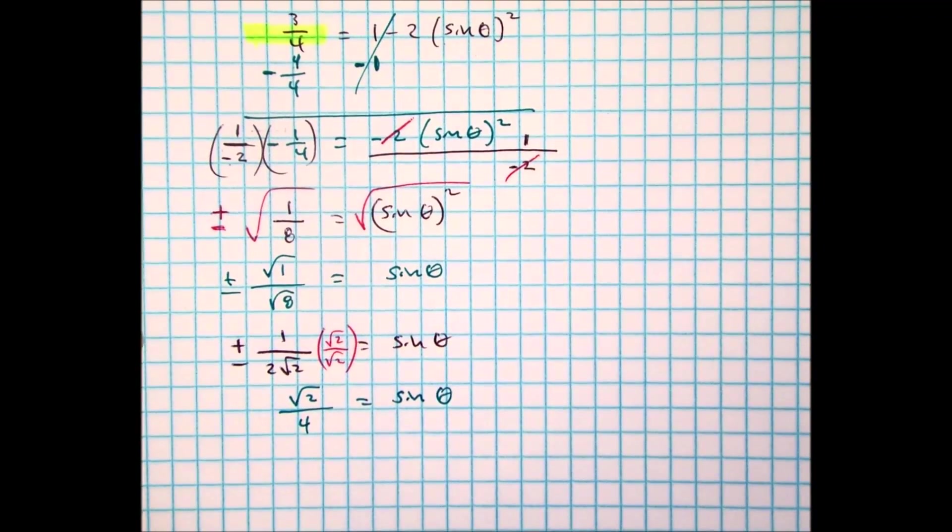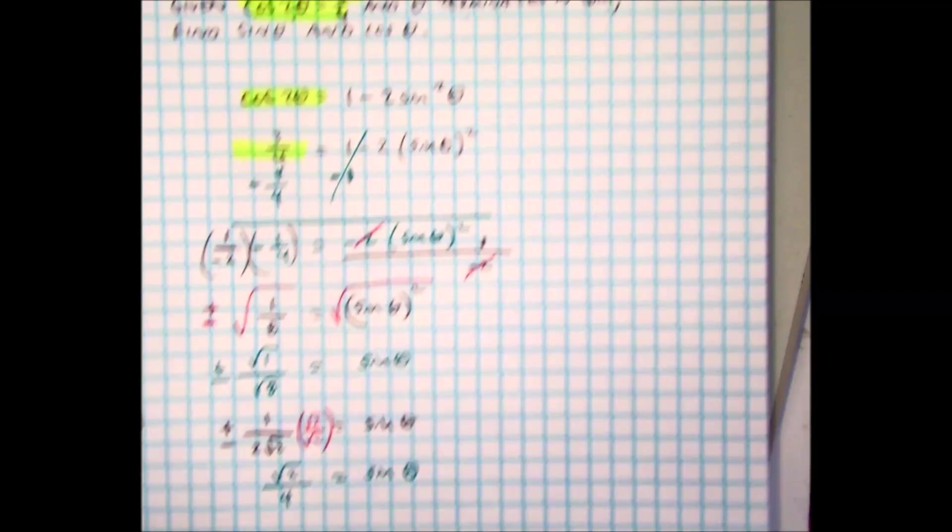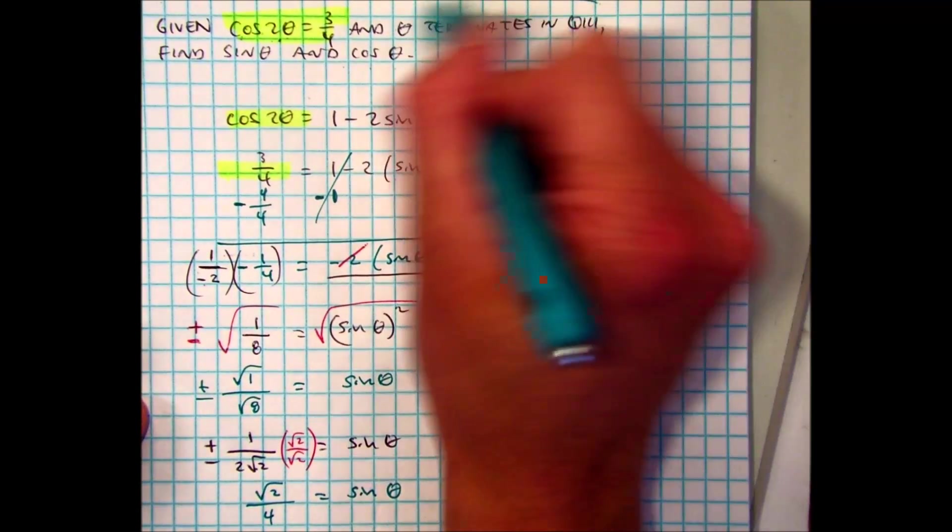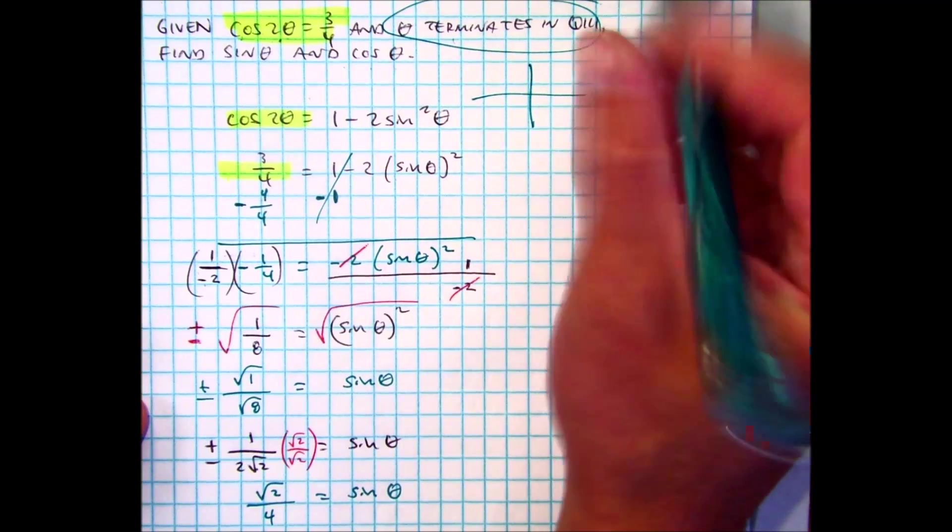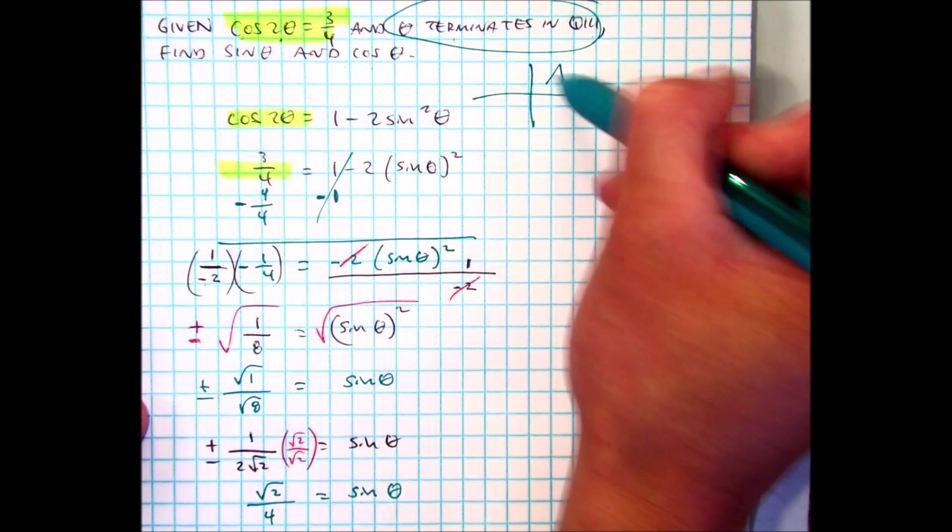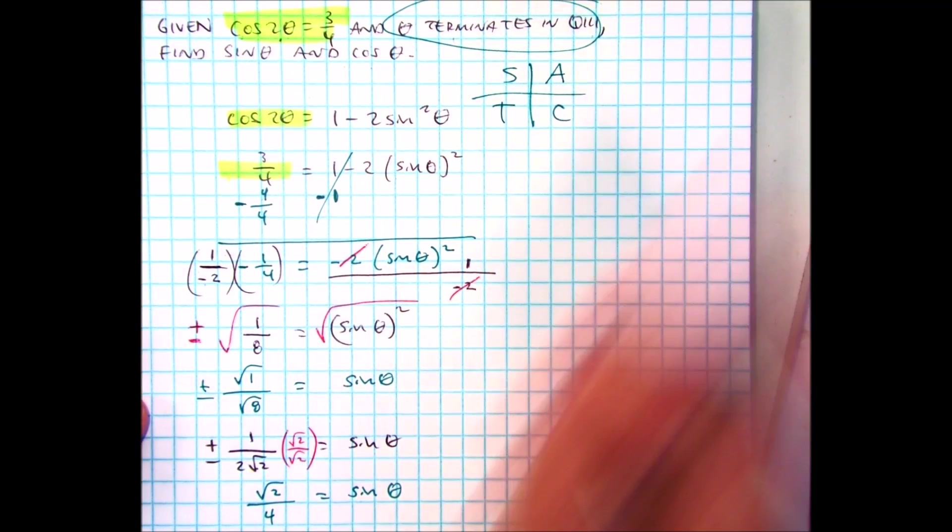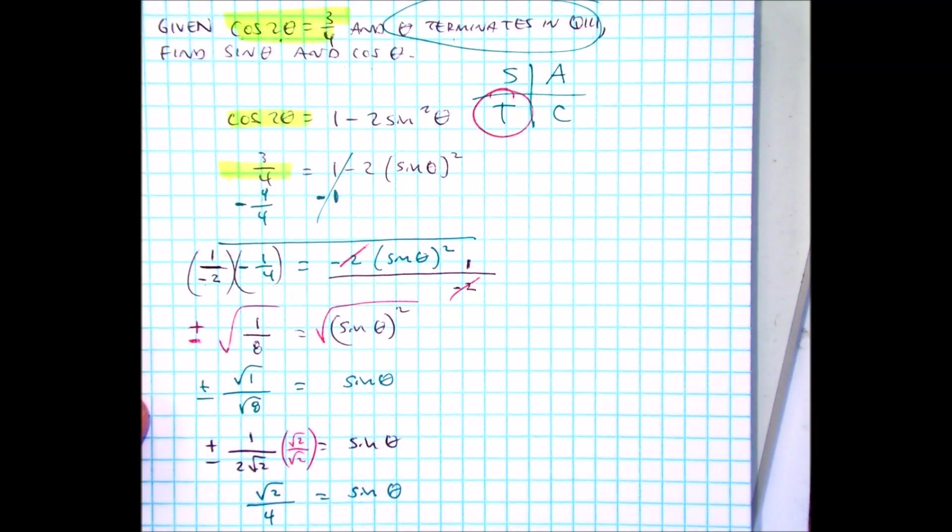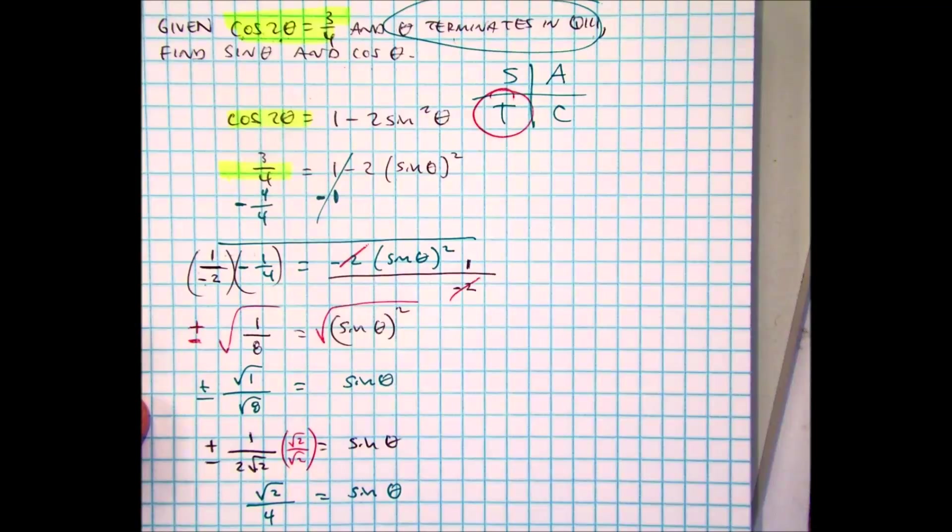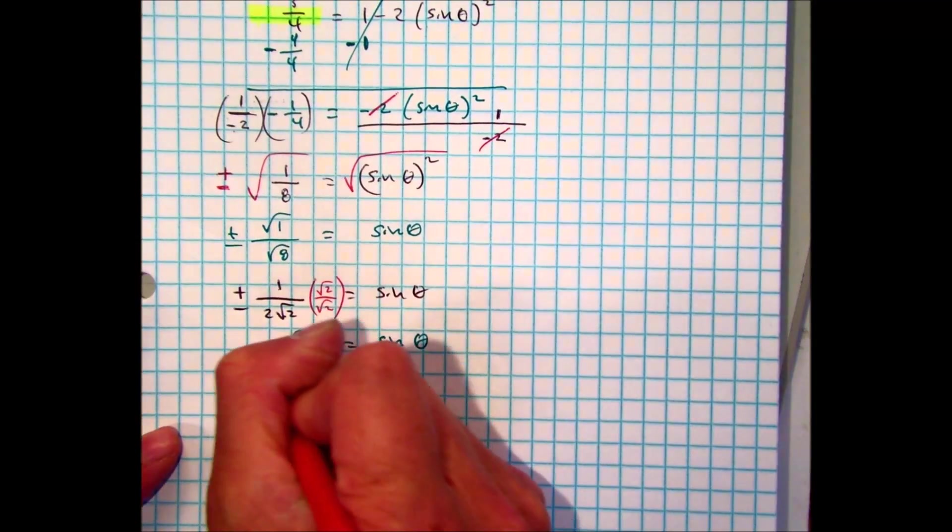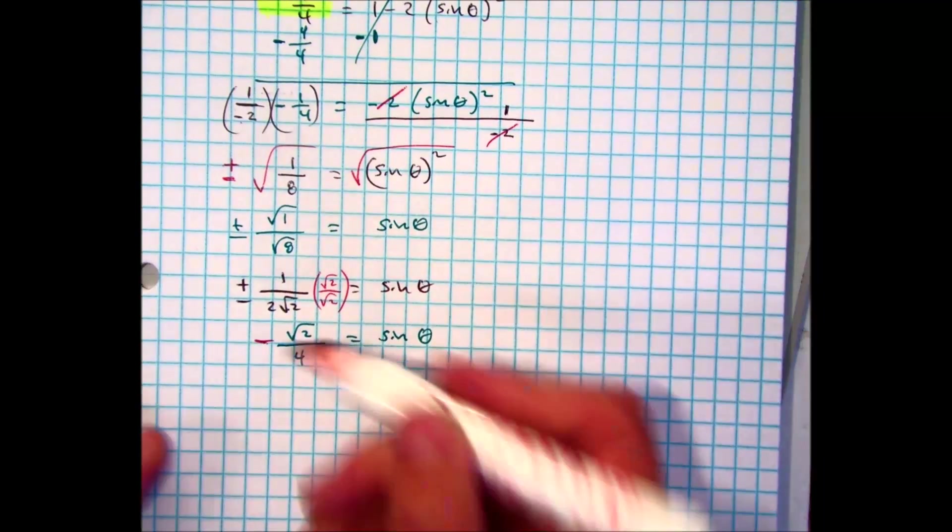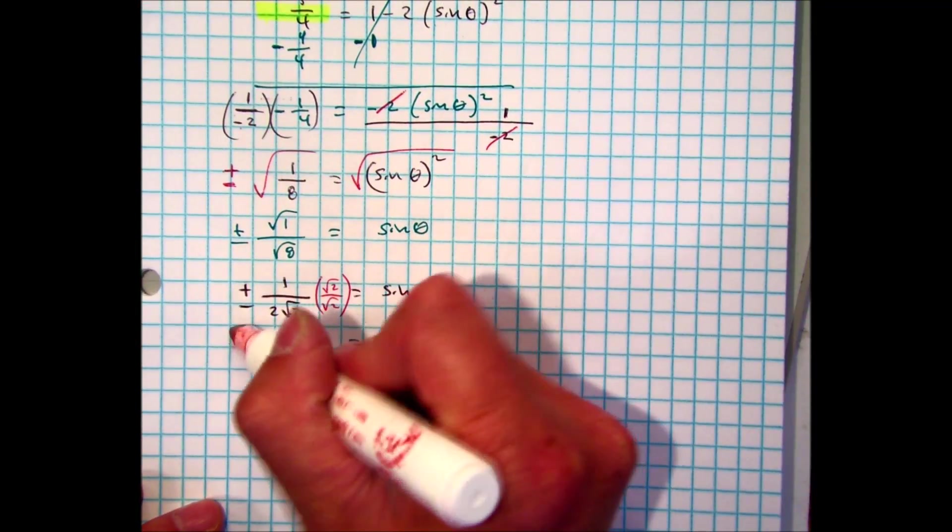Now you might be asking, is it both plus or minus? Well, which quadrant does our angle terminate in? Quadrant 3. What do you know about quadrant 3? Sine is negative. My answer is sine of theta equals negative radical 2 over 4.